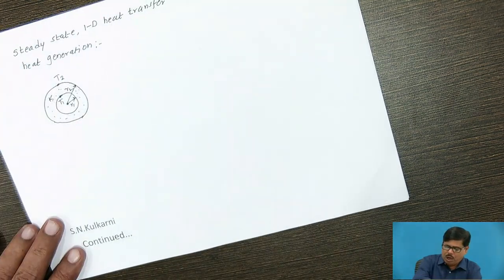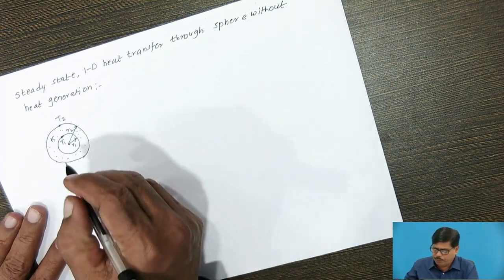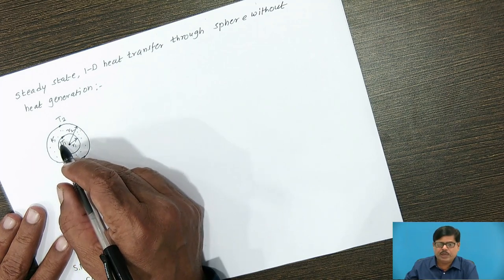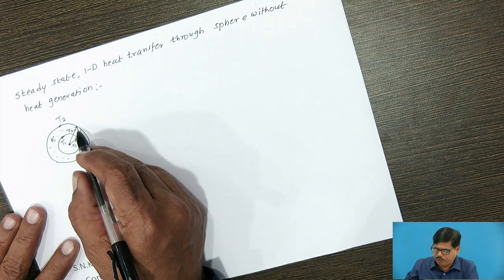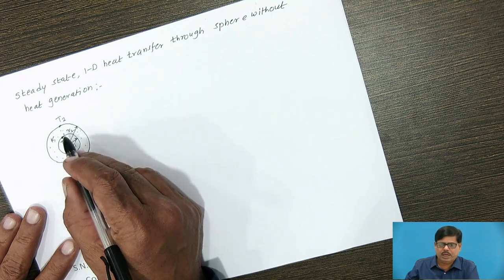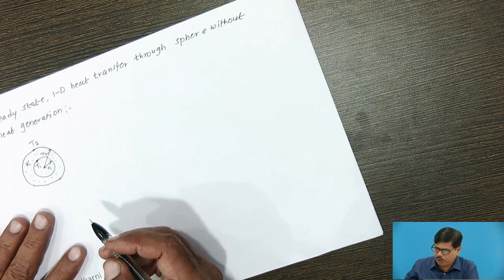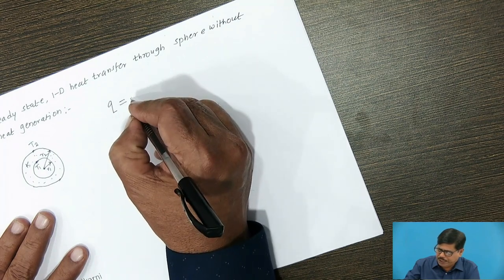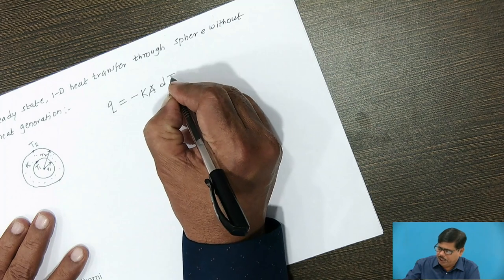Now let us find the steady-state one-dimensional heat transfer through a sphere without heat generation. We assume a hollow sphere made of a material with uniform thermal conductivity k, inner radius r1 and outer radius r2, with temperatures T1 and T2 on the inner and outer surfaces respectively. We write the Fourier law for one-dimensional radial heat conduction: Q = −kA dT/dr.